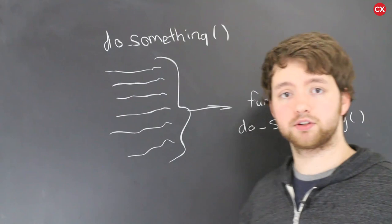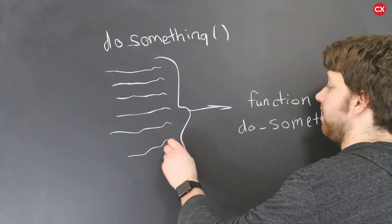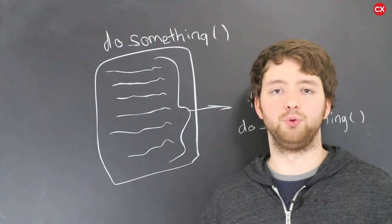Well now anytime we want to call these lines of code we just got to say do something. So we could say it up here. We could say it down here. Wherever we want it works. And then if we want to change that code we only have to change it in one location which is in that function definition. So that is the benefit of functions. It makes our code more scalable.